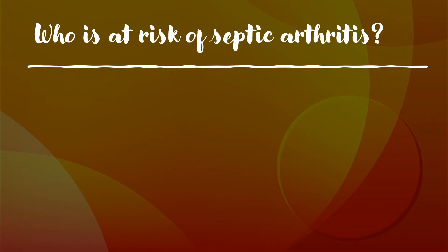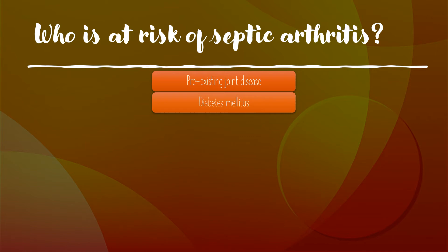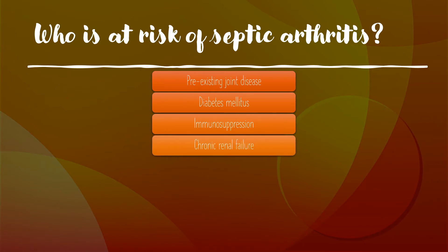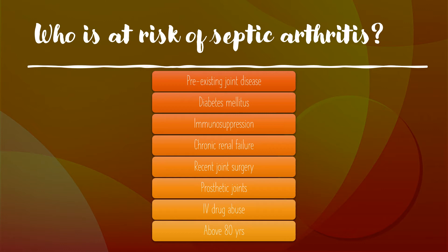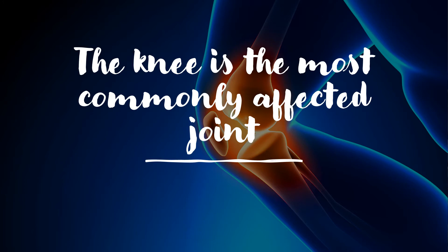Let's look at what groups of people are at risk of septic arthritis. People with pre-existing joint disease, especially those with rheumatoid arthritis, particularly because the medications they use are immunosuppressants. Then people with diabetes, because they have a weak immune system — the same applies to immunosuppressed patients and those in chronic renal failure. People who have had recent joint surgery have an increased risk, as with prosthetic joints. Being an IV drug user increases your risk, and so does being over 80. Importantly, the knee is affected in more than 50% of all cases.